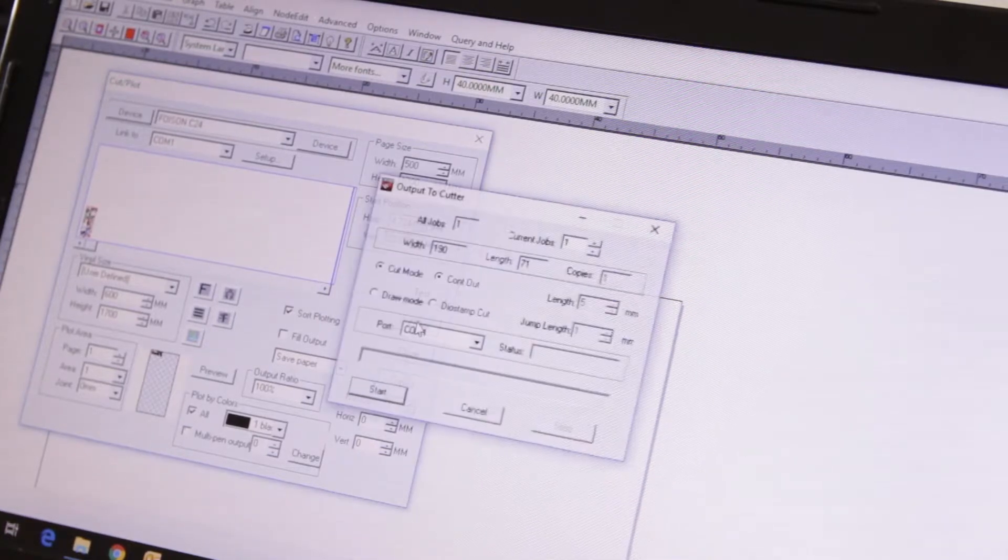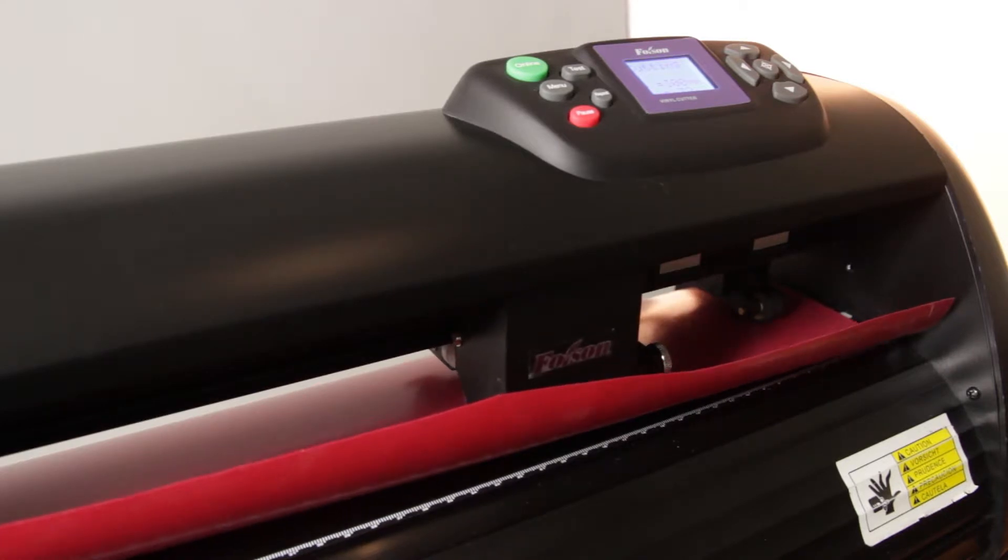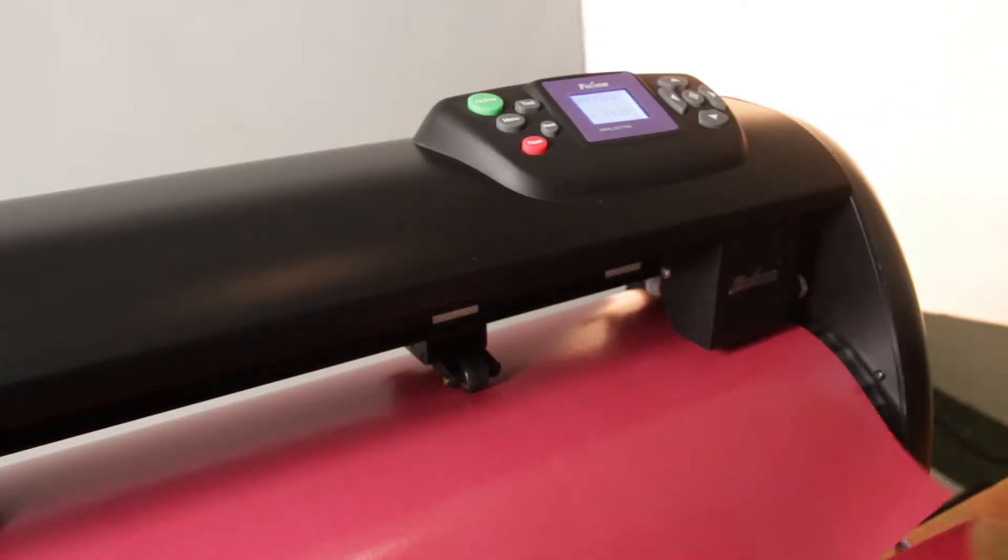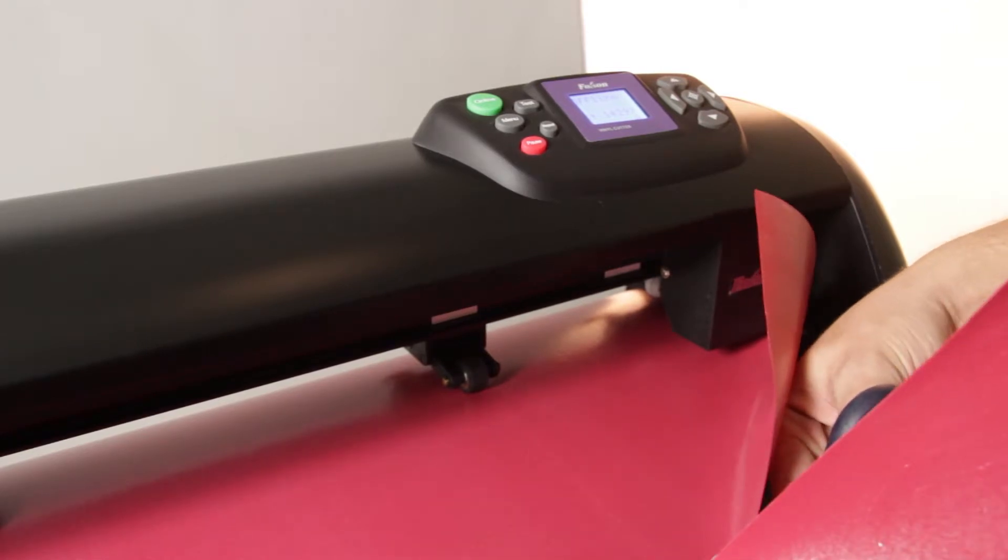The vinyl cutter will now start the cutting process, which usually takes a few seconds depending on the complexity of your design. Once the machine is done cutting, you can go ahead and cut the piece off that has been cut by the vinyl cutter.